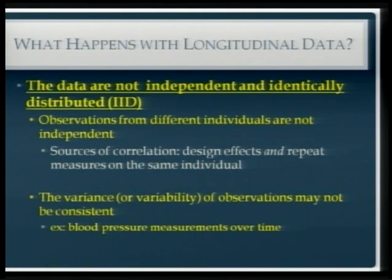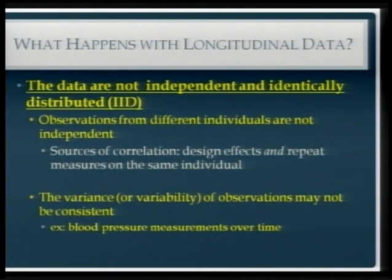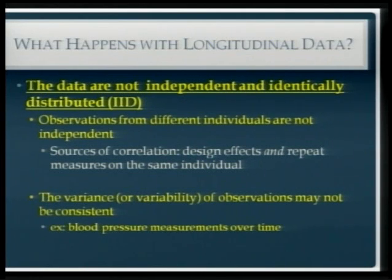We also know that with repeat measures, the variability of observations can be related. If you have five blood pressures on Andrew, knowing the first tells you something about predicting the second. So any repeat measures are inherently going to be correlated. There are multiple sources of correlation here that don't mean you can't do the analyses — it just means you need to take that correlation into account.